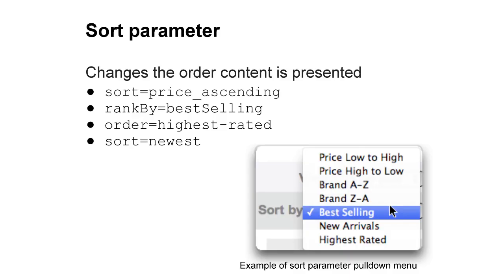The first parameter I'd like to cover is the sort parameter. We're covering this first, but it's a fairly complicated parameter and setting. The sort parameter is something like sort equals price ascending, or rank by equals best selling — any of these types of parameters that just change the order that the content is presented. These are sort parameters.